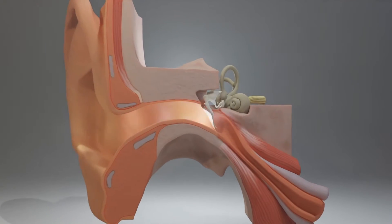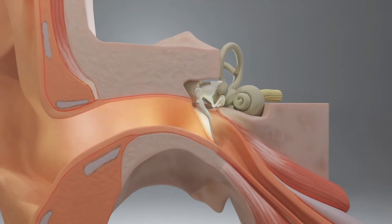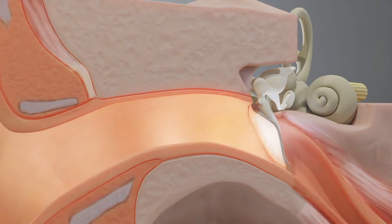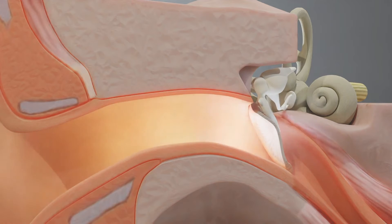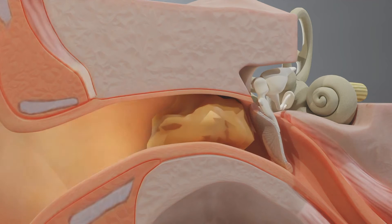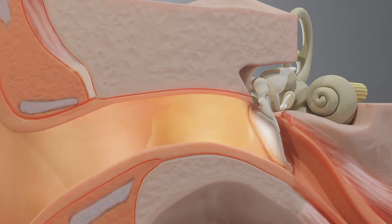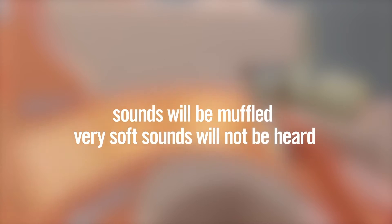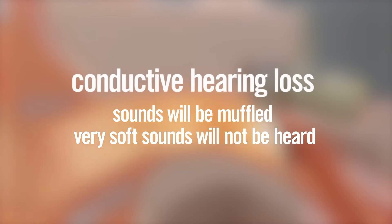Normally, the outer ear gathers sounds from the environment and funnels them through the ear canal to the middle ear. But sometimes sounds cannot reach the inner ear. This happens when wax is in the ear canal, fluid is in the middle ear, or part of the ear doesn't form properly. Sounds will be muffled and very soft sounds will not be heard.